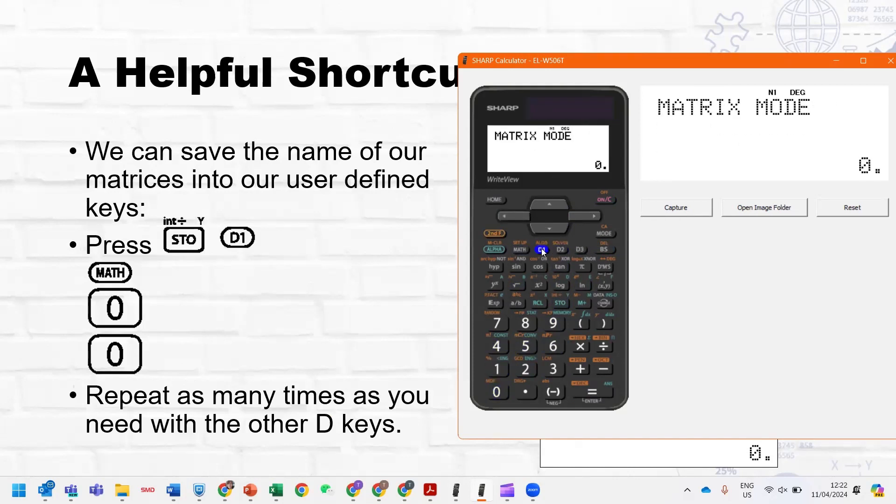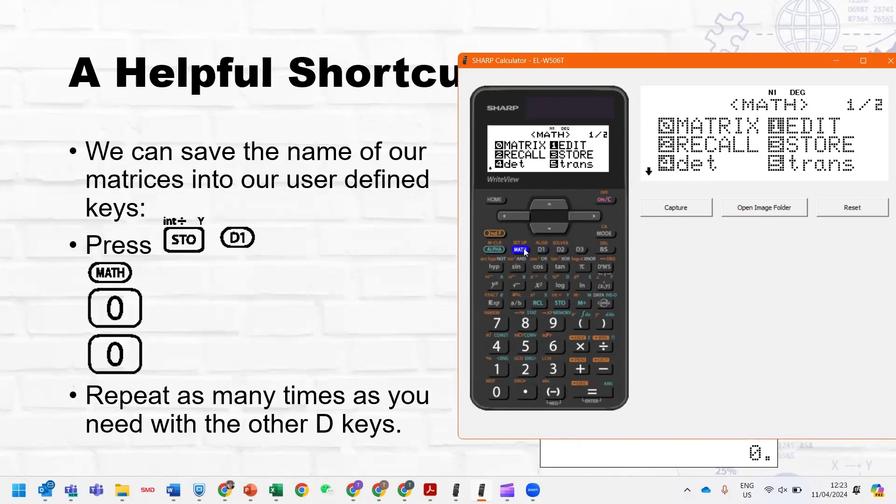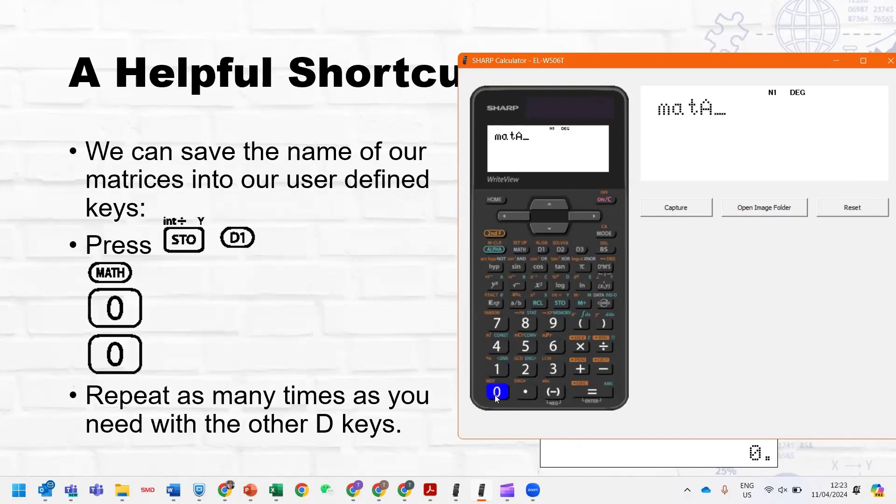And so what this allows me to do is that anytime I want to work with matrix A, instead of having to say math matrix zero for matrix A, I can just press D1. And so that saves me a lot of time when I am in an exam, and I'm busy doing calculations with my matrix.